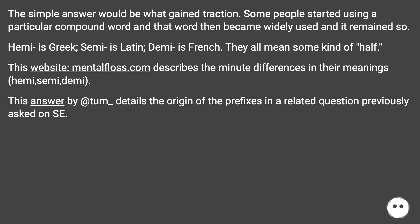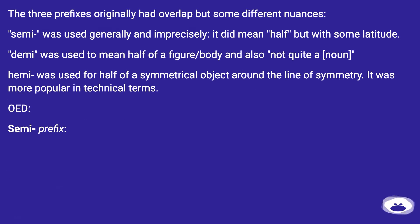This answer details the origin of the prefixes in a related question previously asked on Stack Exchange. The three prefixes originally had overlap but some different nuances. Semi was used generally and imprecisely — it did mean half, but with some latitude. Demi was used to mean half of a figure or body, and also 'not quite a' noun. Hemi was used for half of a symmetrical object around the line of symmetry, and was more popular in technical terms.